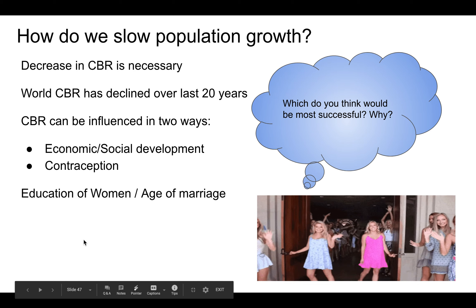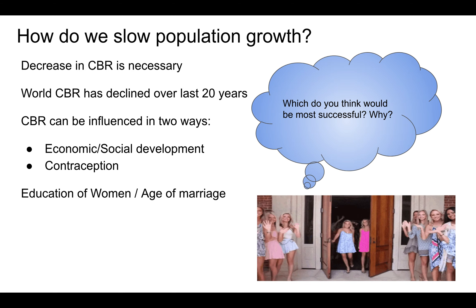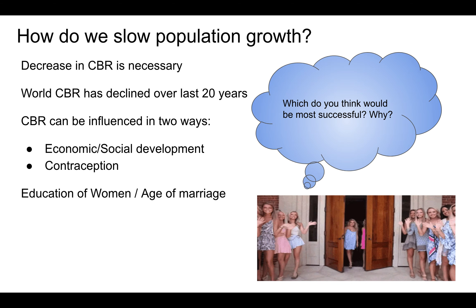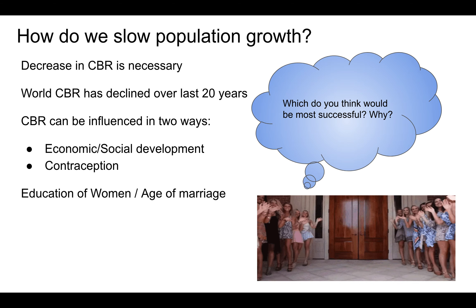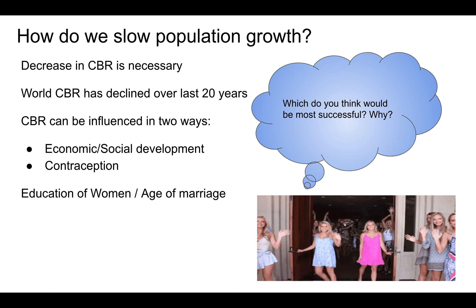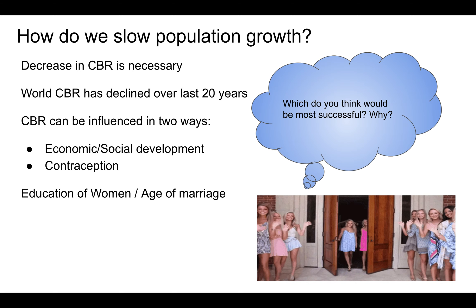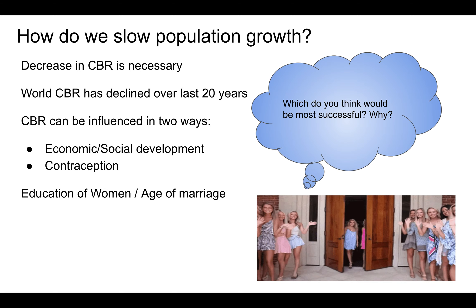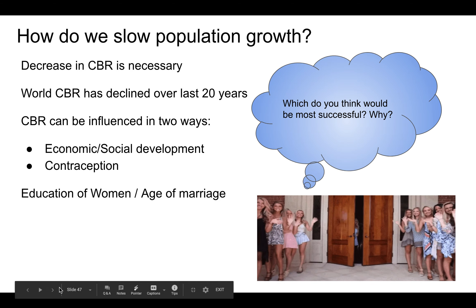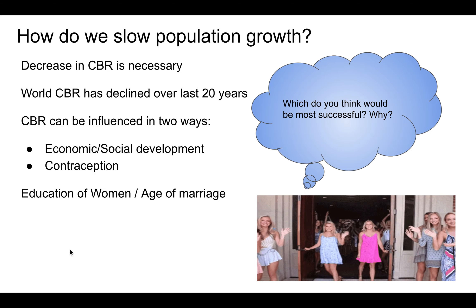To slow population growth, you need to decrease the CBR. Ways to do this include educating women, providing contraceptives and birth control, economic mobility for women, social development toward economic equality among social classes, advancement of education, and giving women control over their choice in marriage. CBR has declined over the last 20 years through these methods.